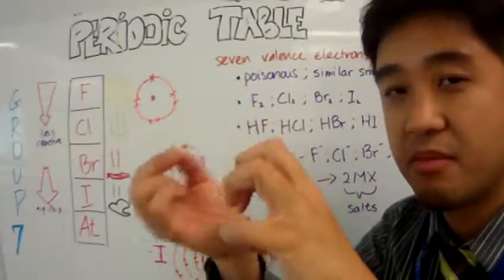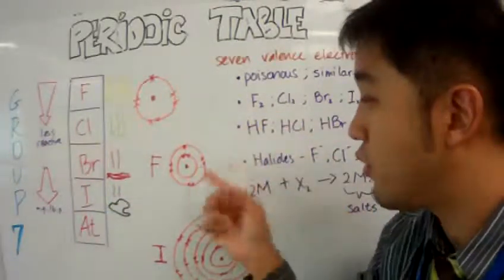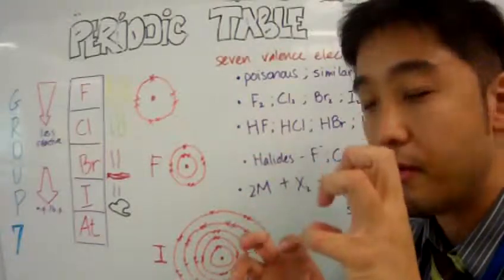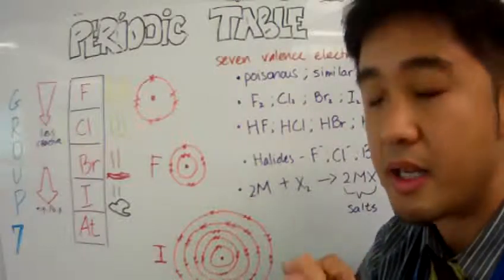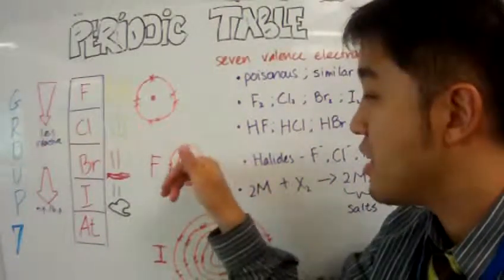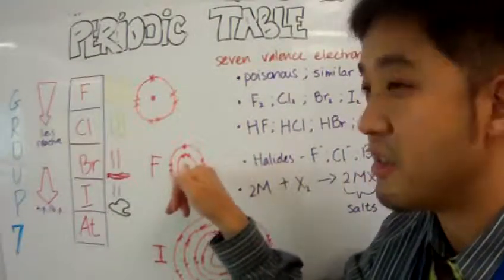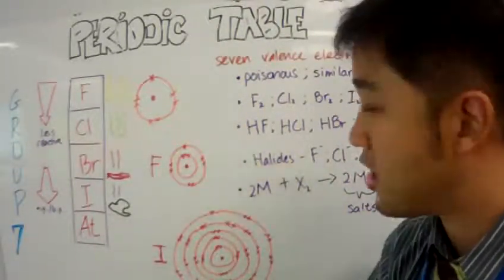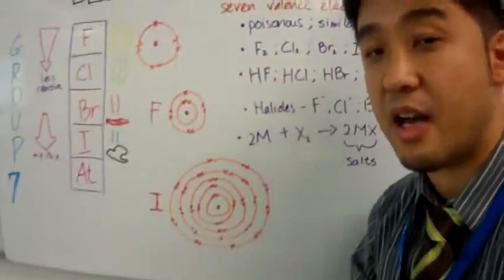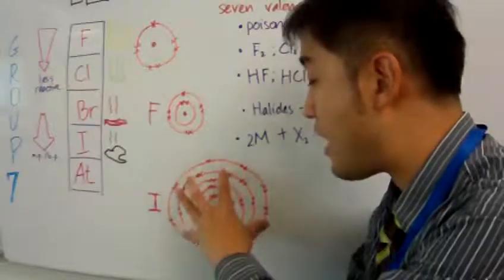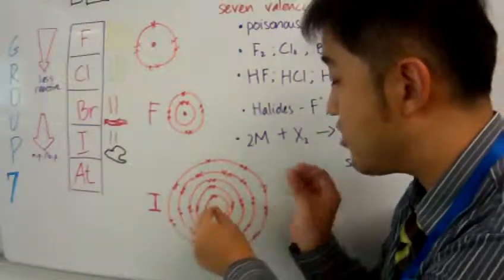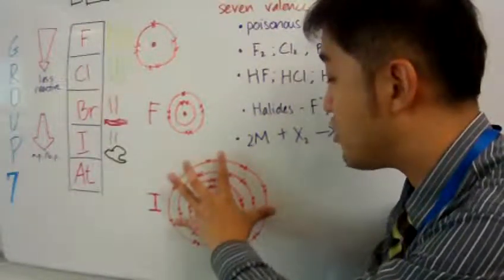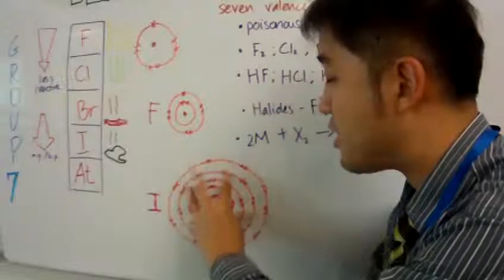Also, the pull between the nucleus of fluorine to the valence electrons is much stronger because there's only one inner shell underneath the valence shell. Whereas iodine has five shells - four of these shells prevent interaction between the valence electrons and the nucleus, so there's less attraction.